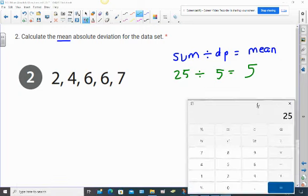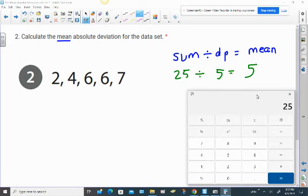Alright, so once we have that, that's not the answer. Don't put that in the answer space because it's not asking for the mean. It's asking for the mean absolute deviation. So that means we have to take the number five and find the distance, I should say, the distance between the two points on a number line is what we have to find.